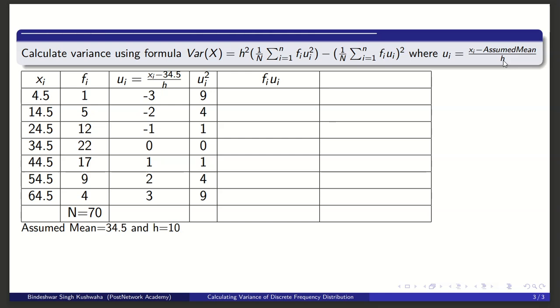And also fi times ui - we will plug these values. When fi is 1 and ui is -3, that's -3. When fi is 5 and ui is -2, that is -10. You can calculate the other values.